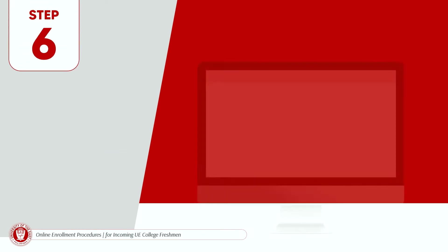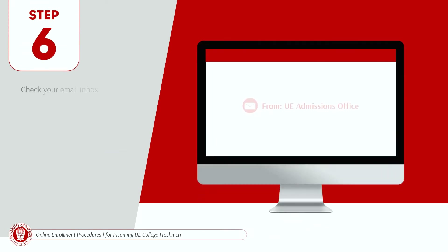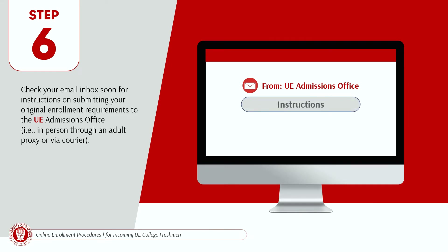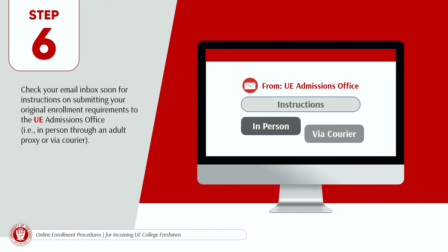Step 6. Check your email inbox soon for instructions on submitting your original enrollment requirements to the UE Admissions Office — i.e., in person, through an adult proxy, or via courier.